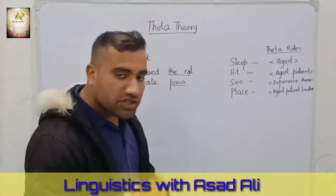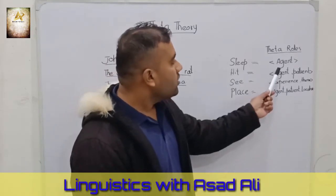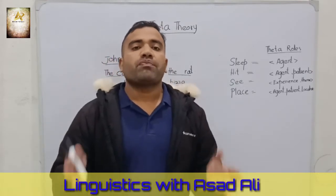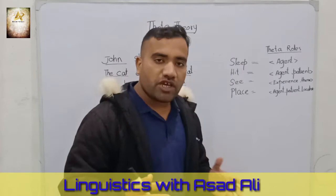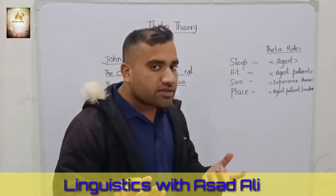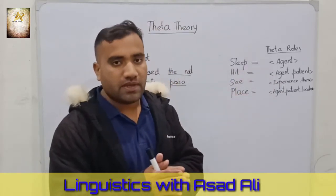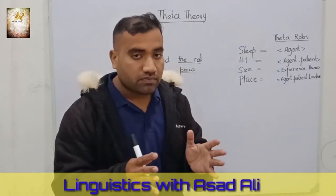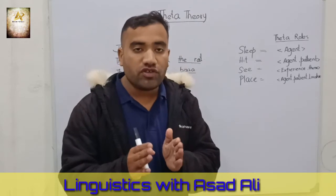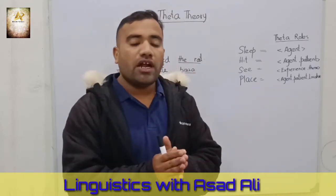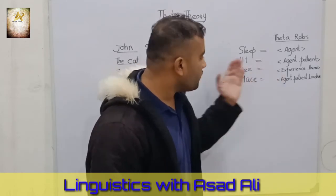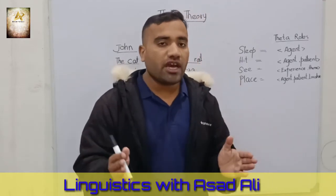One of the theta roles we see in English is that 'sleep' must need an agent role, because in the sleeping process we have some agent that is sleeping. The second example is 'hit' — for 'hit' we must have an agent that can hit something. If someone is being hit, there are two things: the hitter, who is the agent doing the hitting, and the one being hit, who is called the patient. This is the patient role.